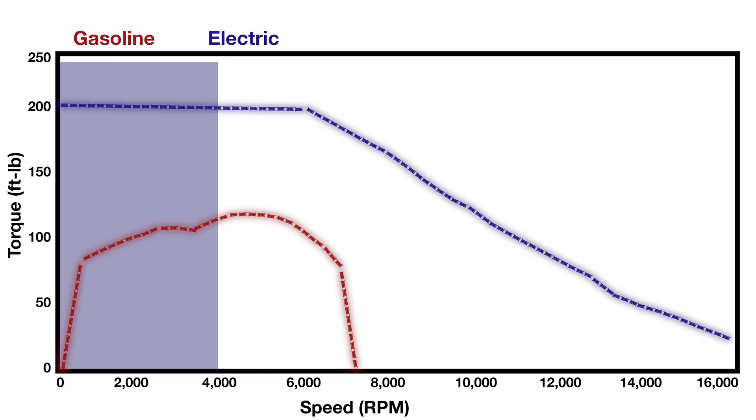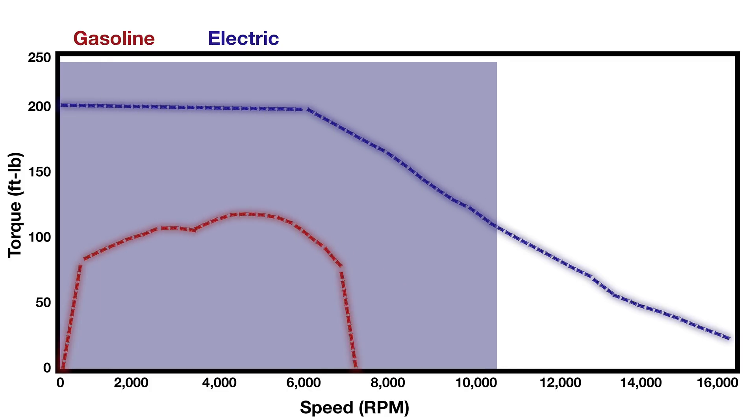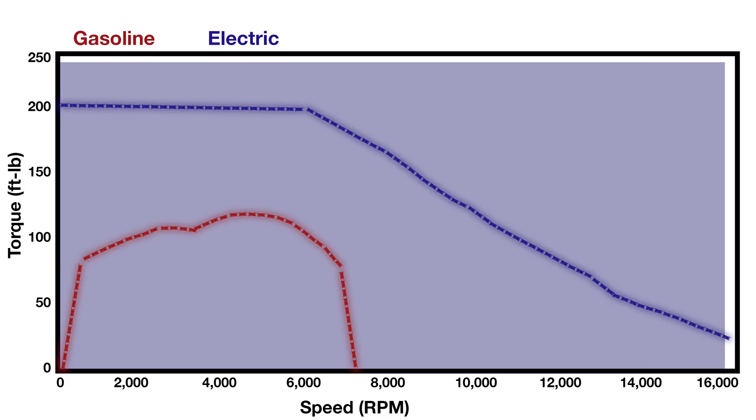In contrast, EVs usually just have a single speed gear reduction. You'll notice the electric motor doesn't just keep its max power output all the way to redline, it actually starts to drop off as well.